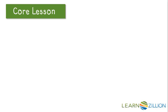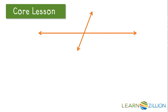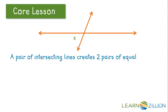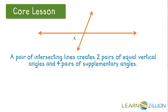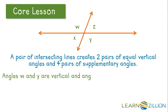Let's take a look at consecutive interior angles by first looking at intersecting lines. Here we have two lines intersect, and we can say one angle is called angle X. A pair of intersecting lines creates two pairs of equal vertical angles and four pairs of supplementary angles. In addition to angle X, we have angle Y, angle Z, and angle W. Angles W and Y are vertical, and angles X and Z are also vertical because they're across from each other.